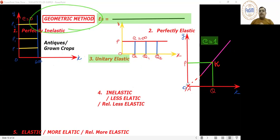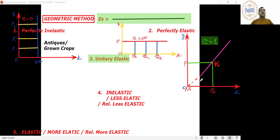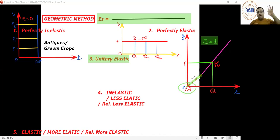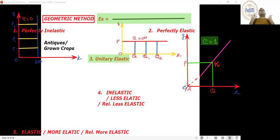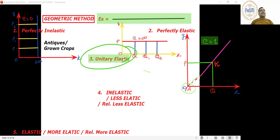This experiment was shown in the last lecture in the percentage method: change in price from OP to OP1, change in quantity from OQ to OQ1 by equal proportions. We drew the supply slope and extended it backward — it touched the origin. So when extended, if it touches the origin, it is unitary elastic.